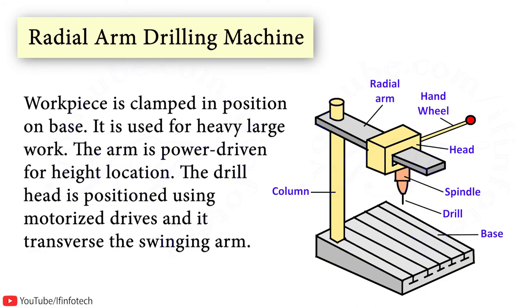In the Radial arm drilling machine, the workpiece is clamped in position on the base. It is used for heavy, large work. The arm is power driven for height location, and the drill head is positioned using motorized drives which traverse the swinging arm.